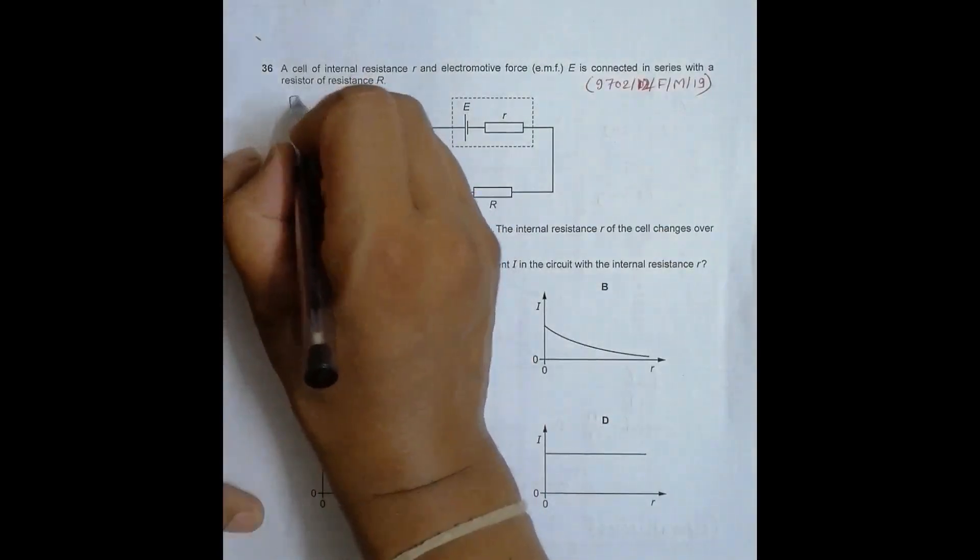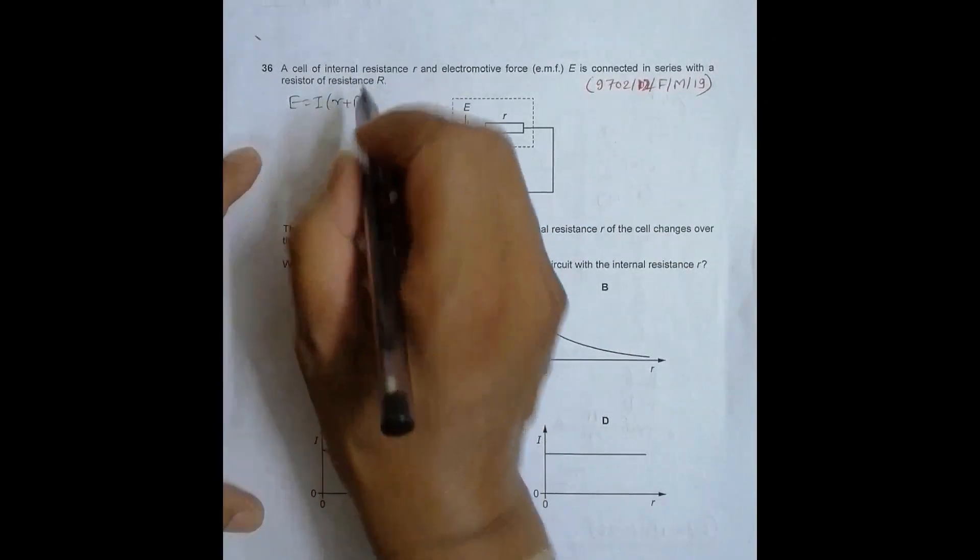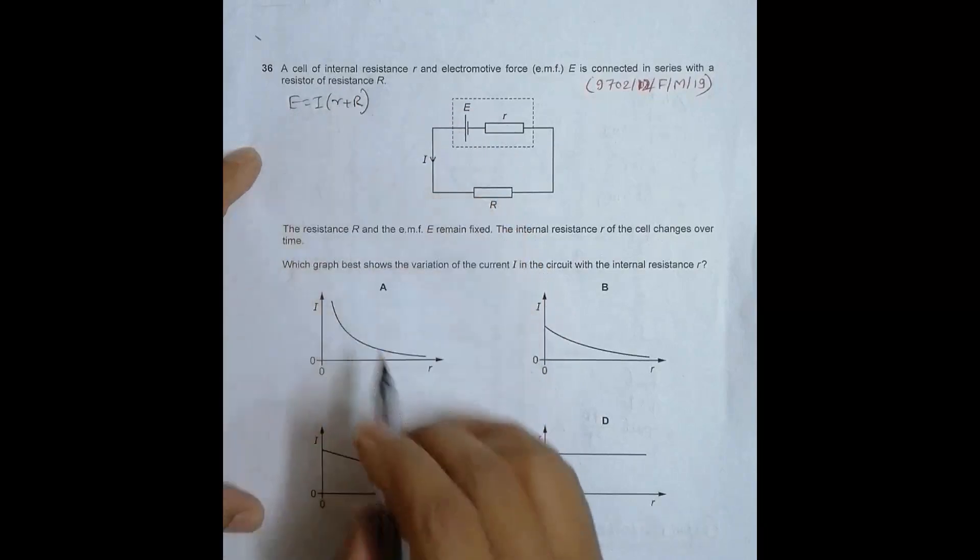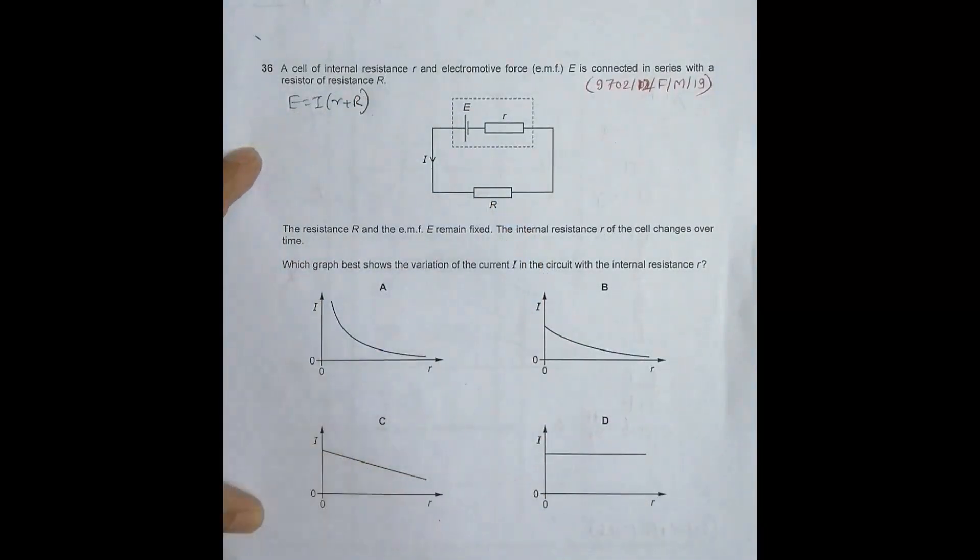E is equal to I times (R + r), so I into total resistance of the circuit. In order to do this, we have to express the relation as I equal to something.